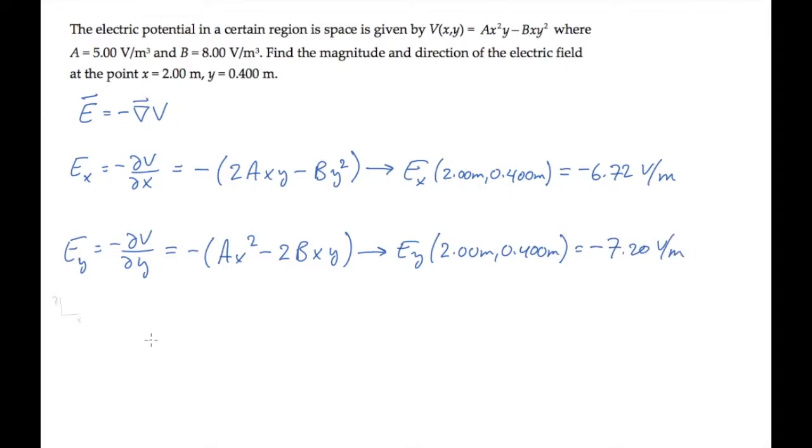The electric field then has a negative x component and a negative y component. We can find its magnitude using the Pythagorean theorem. When you substitute the values we calculated above and calculate, you find that the magnitude of this electric field is 9.85 volts per meter.